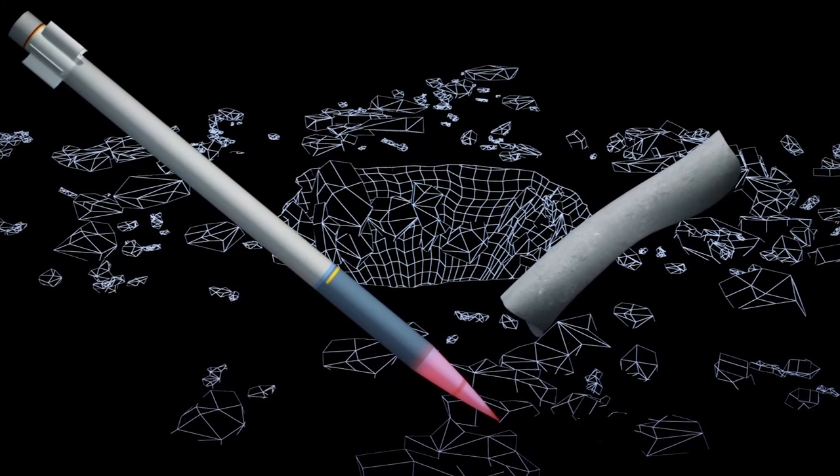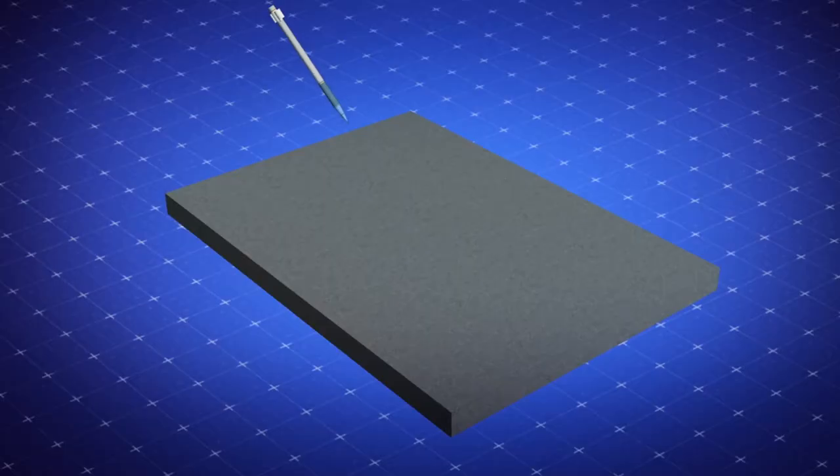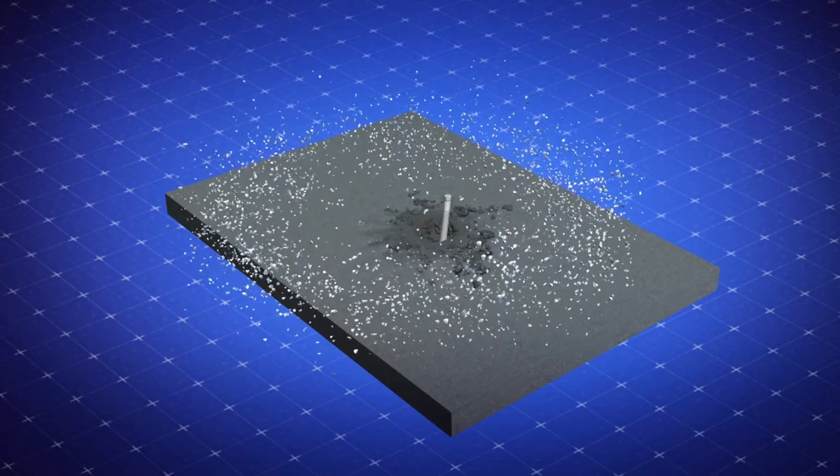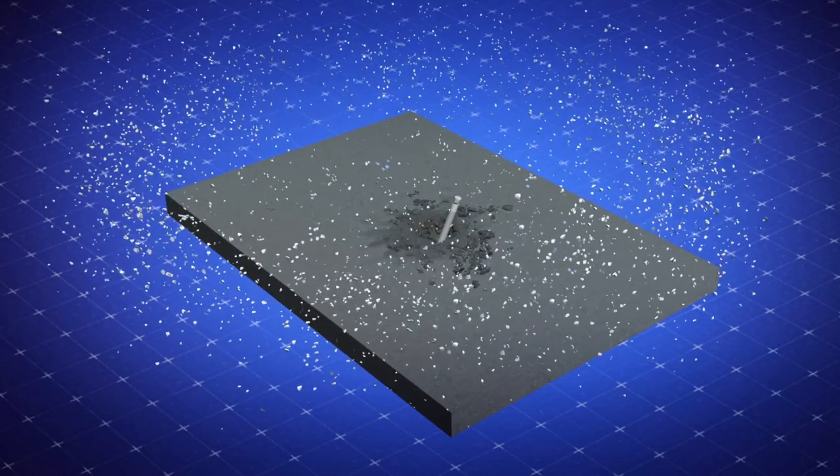detonation and impact simulations indicate that it may have been generated by a 122-millimeter artillery rocket armed with a high-explosive warhead, a weapon the Syrian government does not have a monopoly on.